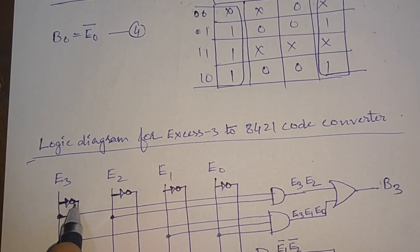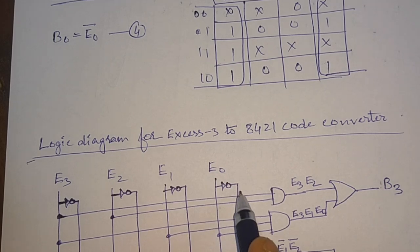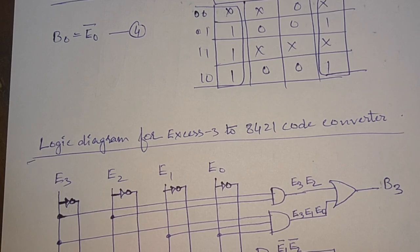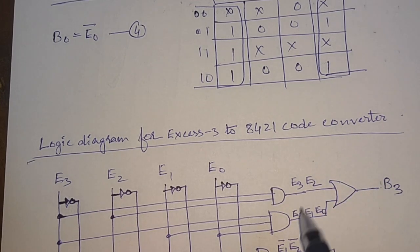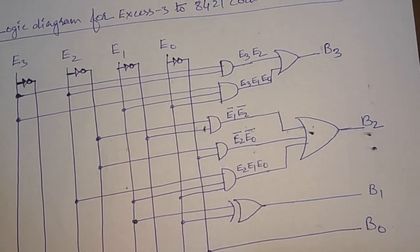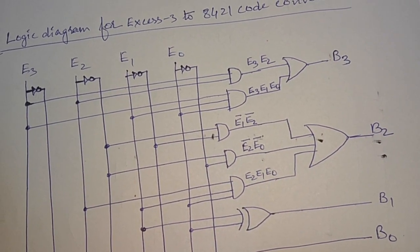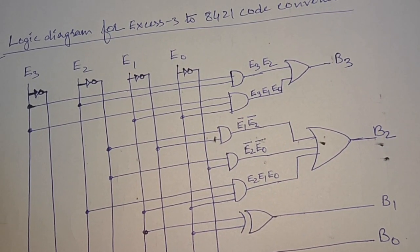We have taken complements of each input to get E3-bar, E2-bar, E1-bar, and E0-bar on their respective lines. From the Boolean expressions in equations 1, 2, 3, and 4, we get this logic circuit for the XS3 code to BCD converter.